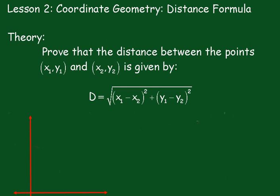Lesson 2: Coordinate Geometry Distance Formula Theory. Prove that the distance between the points (x₁, y₁) and (x₂, y₂) is given by D equals the square root of (x₁ - x₂)² plus (y₁ - y₂)².